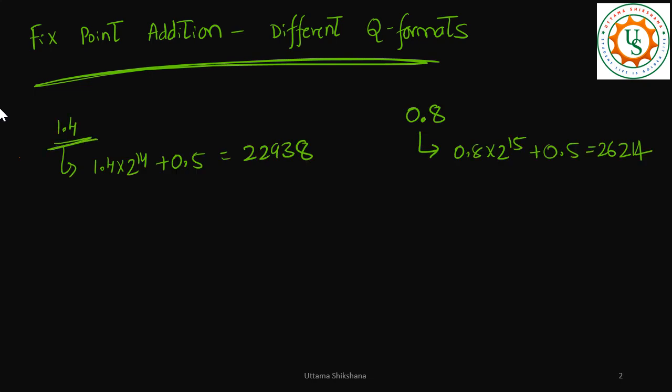Let me take an example of 1.4 and 0.8. When I convert 1.4, since this comes under the range of Q14, I have taken Q14. And this 0.8 comes under the range of Q15, so I will take Q15. Now if I convert into fixed point, I will get this number, similarly for 0.8.